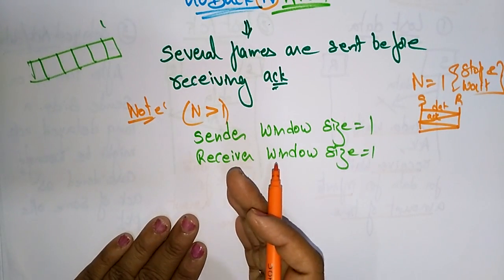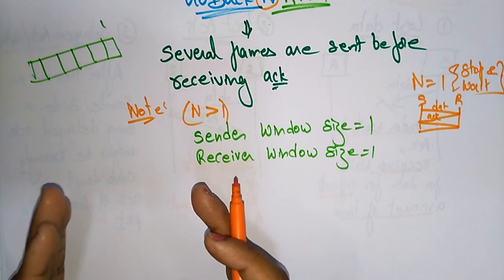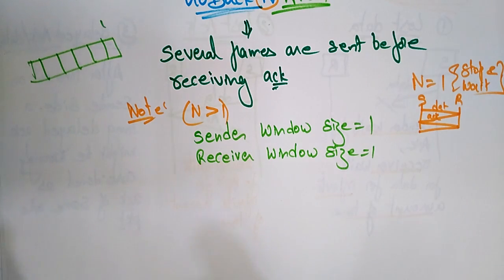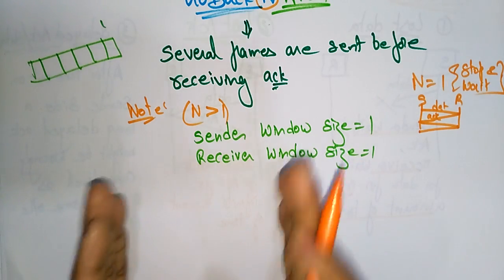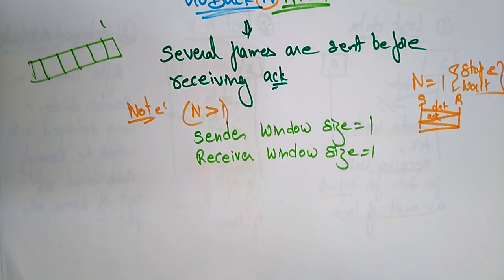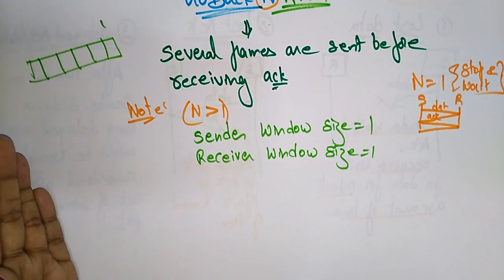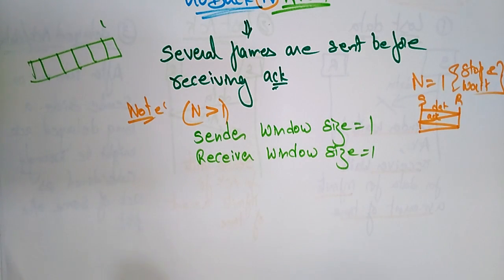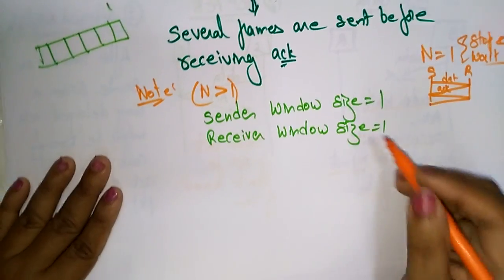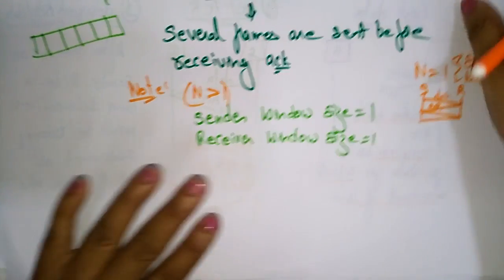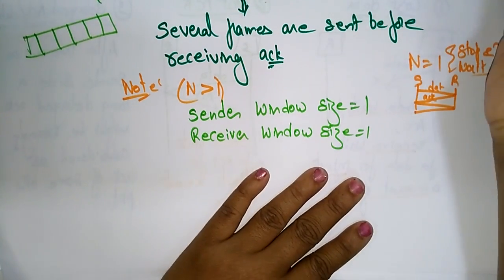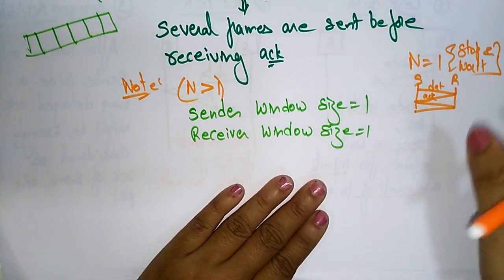During transmission from sender to receiver, if a frame is damaged, lost, or the acknowledgement is lost, some action is performed by the sender and the receiver. Let's see an example so you will clearly understand the exact concept of Go-Back-N protocol.